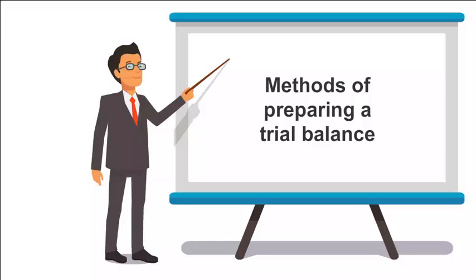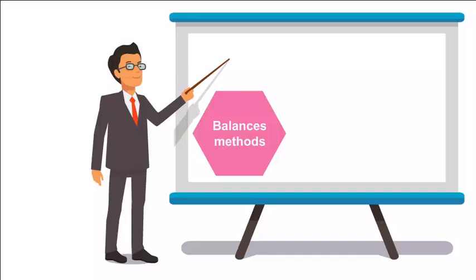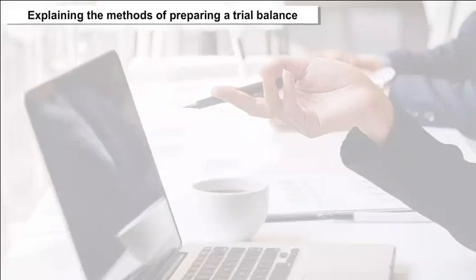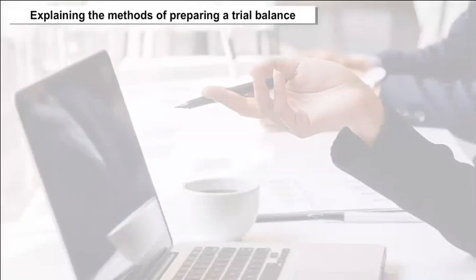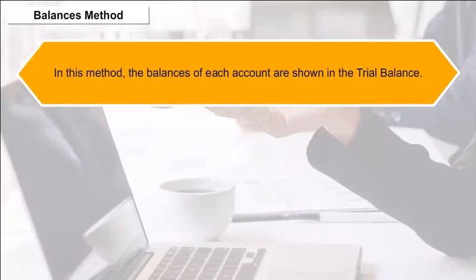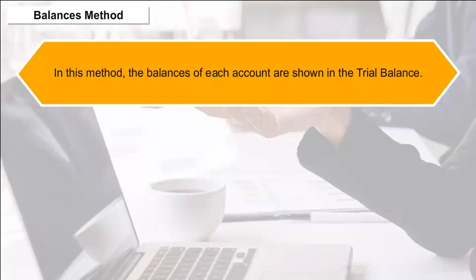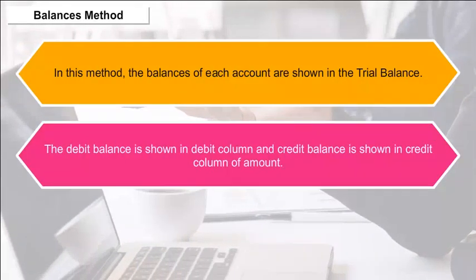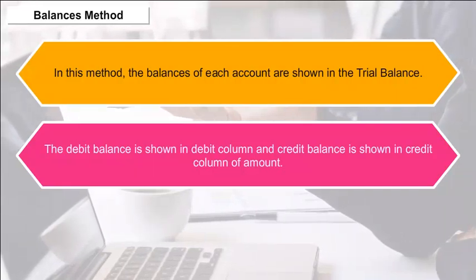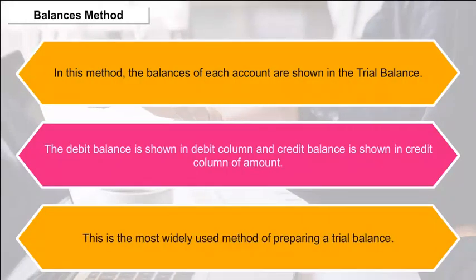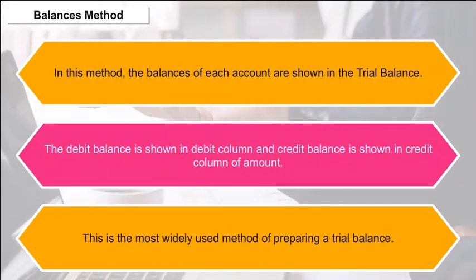The three main methods of preparing a trial balance are: the balances method, the totals method, and the totals-cum-balances method. In the balances method, the balances of each account are shown in the trial balance — the debit balance is shown in the debit column and credit balance in the credit column. This is the most widely used method of preparing a trial balance.